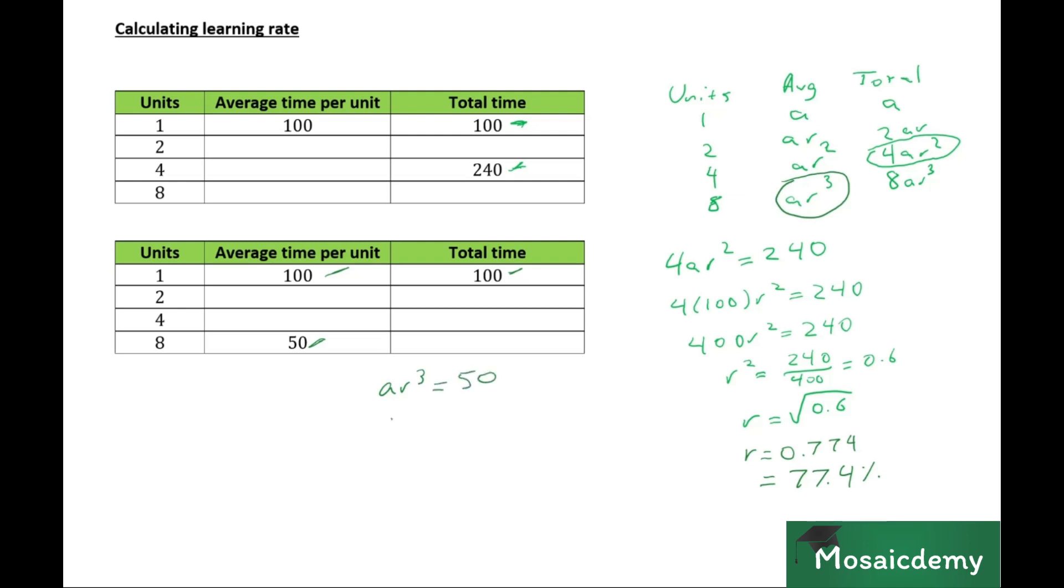So that means that 100 R cubed is equal to 50. R cubed is equal to 50 over 100, which is equal to 0.5. So R is equal to the cube root of 0.5.